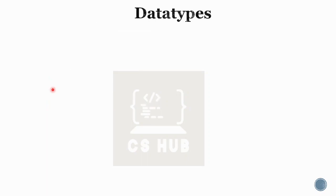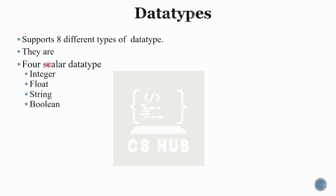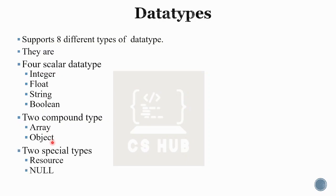Now let's go to the data types. In PHP, it supports 8 different data types. There are 4 scalar data types: integer, float, string, and boolean — these are also called primitive data types. Then there are 2 compound data types: array and object. And 2 special data types: resource and null. That is a total of 8 data types.